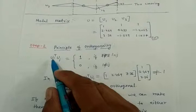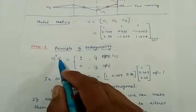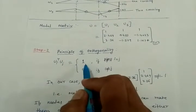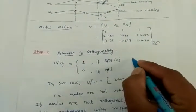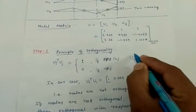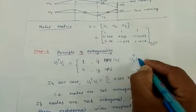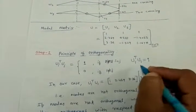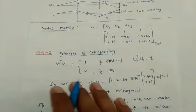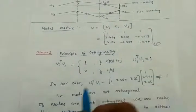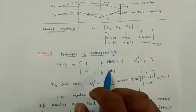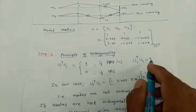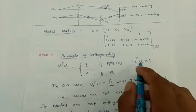So if I take the ith eigenvector and the jth eigenvector, then the transpose of one multiplied by the other must equal one if i equals j — for example, u1 transpose times u1 must equal one, provided these two modes are orthogonal. If i is not equal to j, that means taking mode 1 and mode 2, the result must equal zero — only then can we say u1 and u2 are orthogonal to each other.